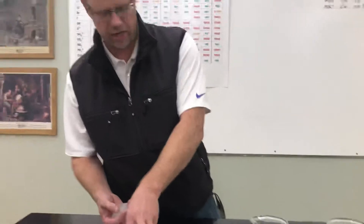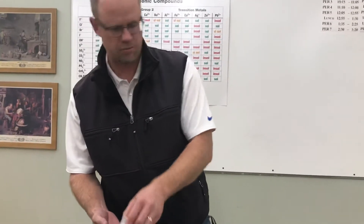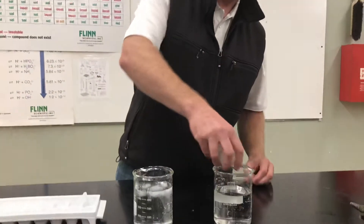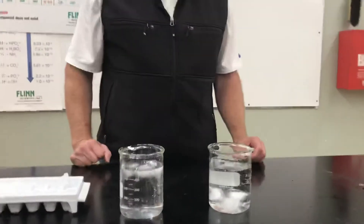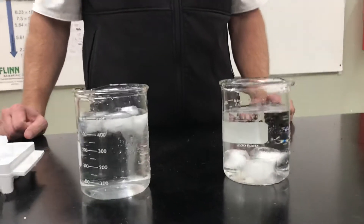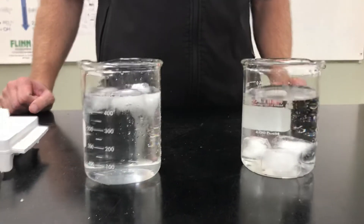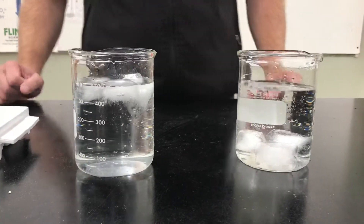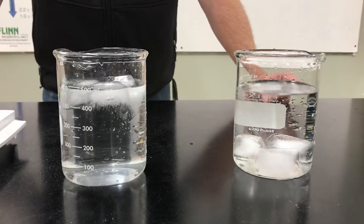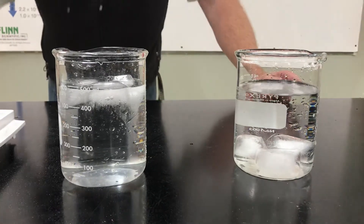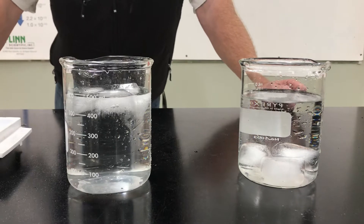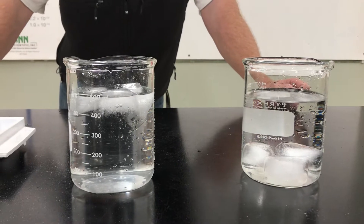I'm going to put these in, and that looks a whole lot like a glass of ice water that you've had before. Now I'm going to grab three more ice cubes out of the same tray and put them in the other beaker. We've got something different going on — in one beaker the ice cubes are floating at the top, and in the other beaker they're sinking.